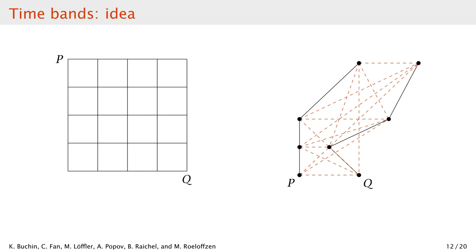So we aim to reduce the number of options we need to consider by introducing time bands. The example shows the time band of width 1, so the i-th point on one curve can only be matched to the i-th point on the other curve, or the one before, or the one after. Similarly, the greyed-out cells in the table are now not considered. Using this concept makes sense in scenarios where curves are regularly sampled or represent some form of interaction between objects, so where we want to enforce similarity in time, and the point indices act as proxy for timestamps.